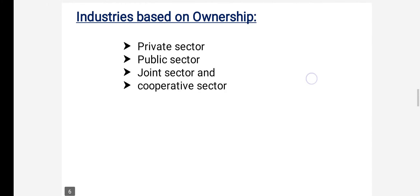Now let's discuss the classification of industries based on ownership. Based on ownership, industries are mainly classified into four types: private sector industries, public sector industries, joint sector industries, and cooperative sector industries.